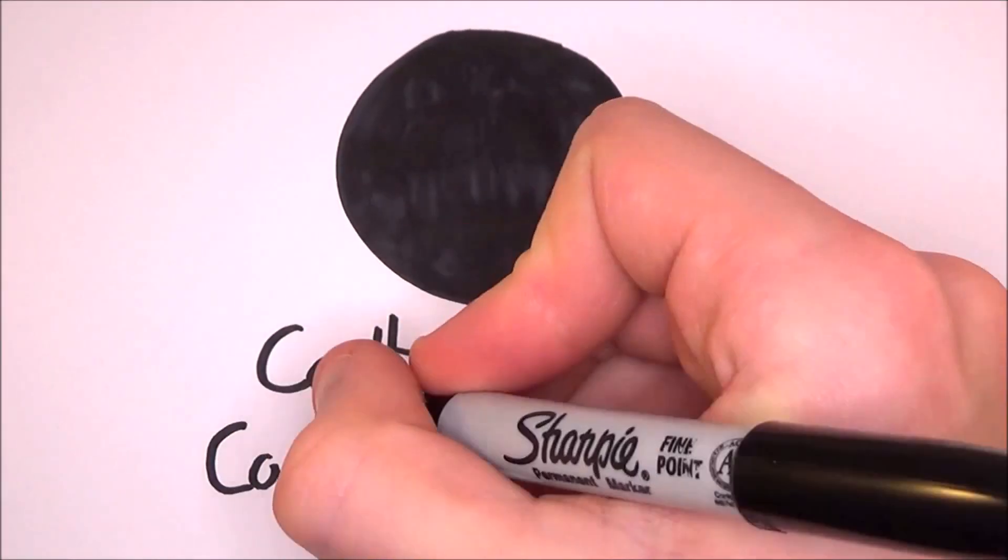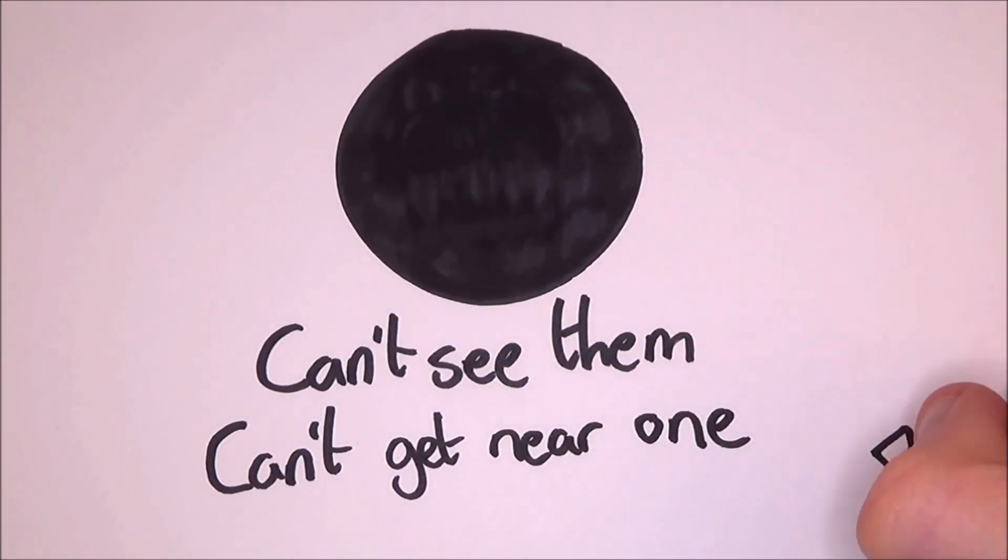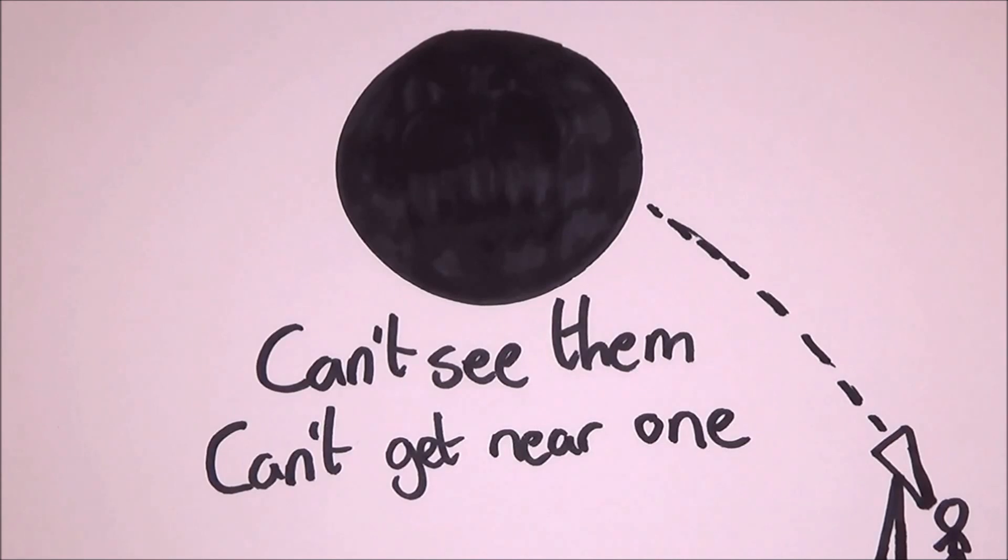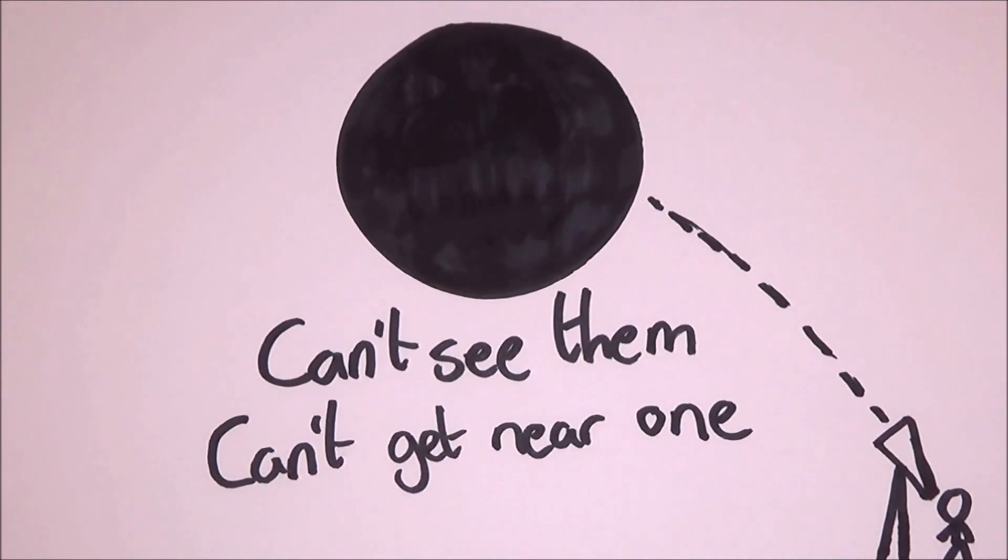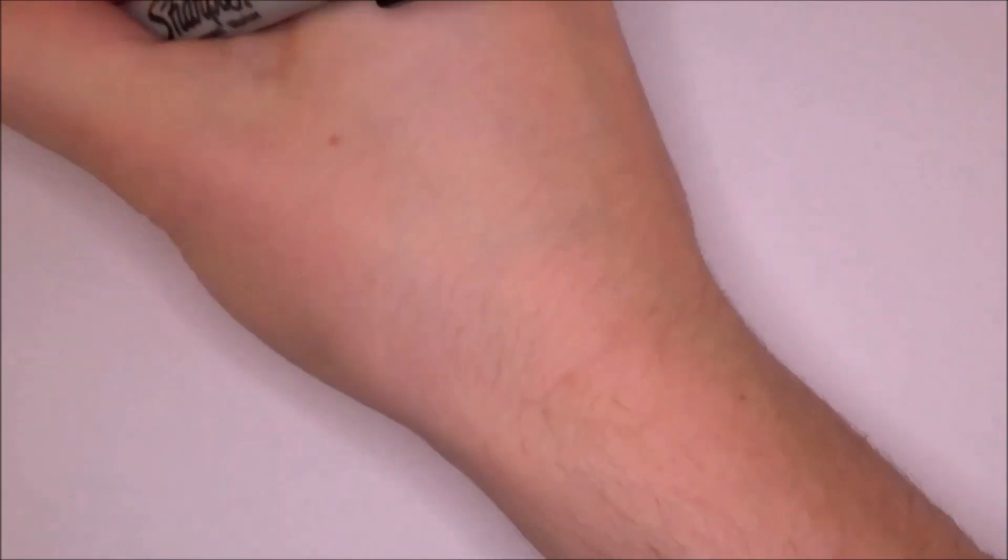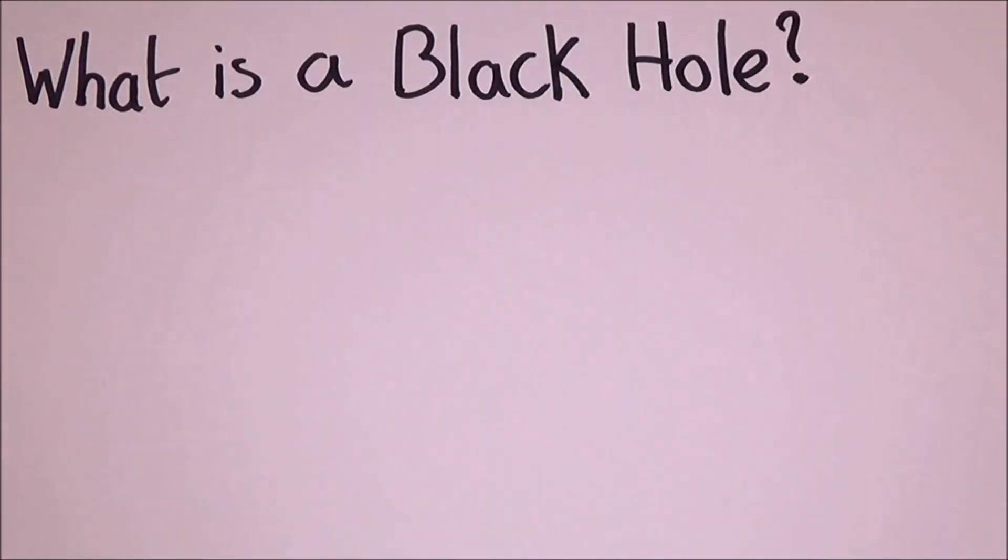You might already know what a black hole is, but the truth? We don't really know that much. We can't see them, we can't get near one, so all we can do is make observations when we finally catch something and then make a theory about it. The only thing we can do is look at how it affects the objects around it. So let's start at the beginning, what a black hole is.